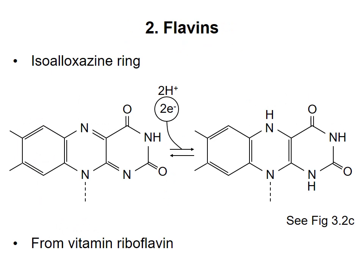Flavins are characterized by the isoalloxazine ring. This is the structure shown here, and is derived from the vitamin riboflavin. Like the nicotinamide group, flavins pick up two electrons at a time. As they do so, they also gain two protons. Flavin-containing compounds are generally prosthetic groups in proteins and not free molecules.